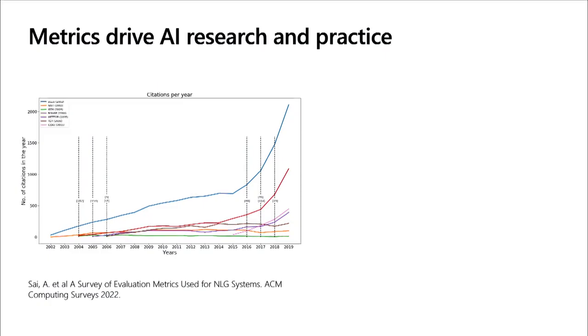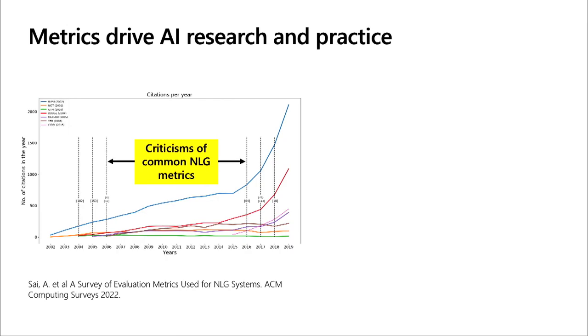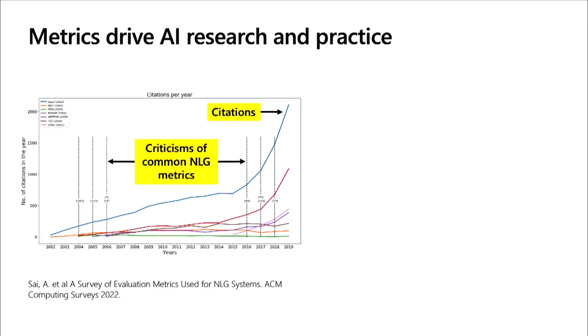Standardized metrics and benchmarks have led to rapid advancements in AI because they allow apples-to-apples comparisons across models. But when these metrics don't reflect what people need, bad things happen, and when they're used to make deployment and development decisions, things go wrong. A 2022 survey of natural language generation systems papers shows citations for criticized metrics have only increased despite known shortcomings.